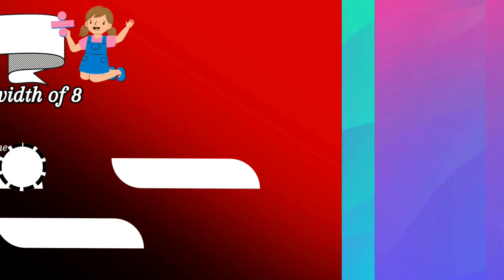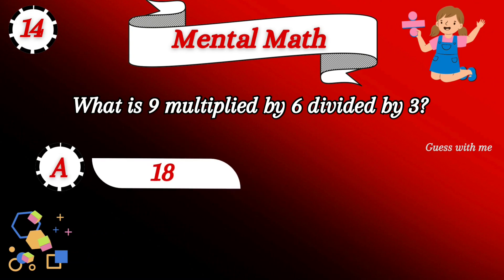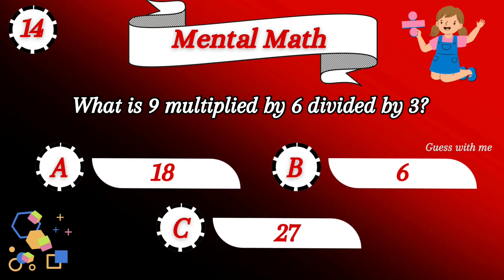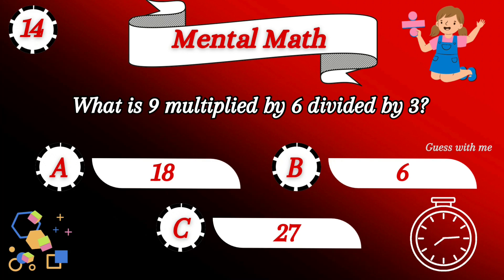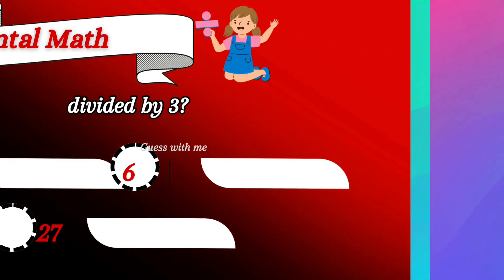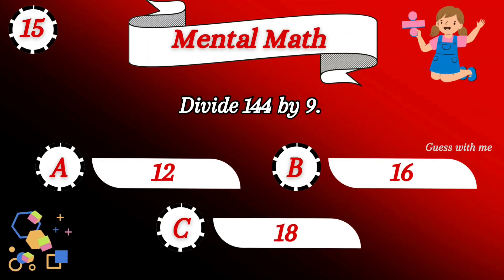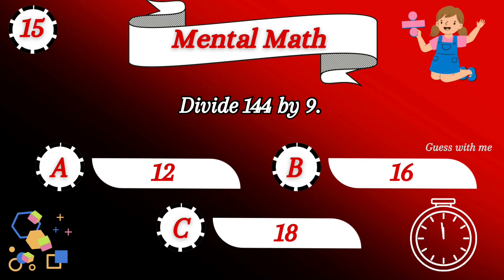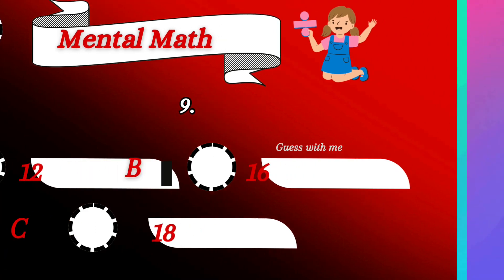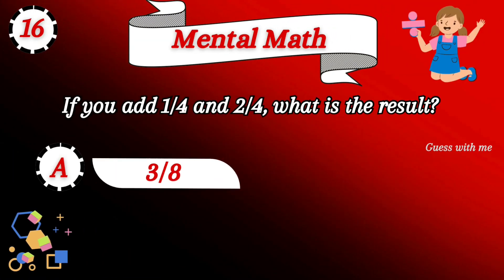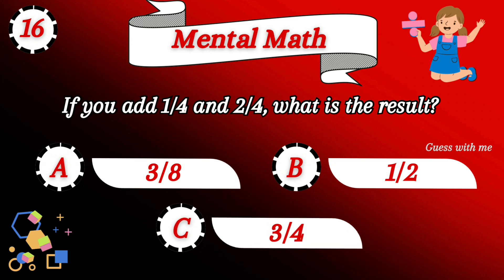Your answer is option C. What is 9 multiplied by 6 divided by 3? Option A — 18 is the answer. Question number 15: divide 144 by 9. Option A — 12 is the answer.